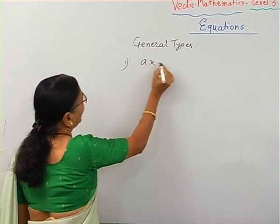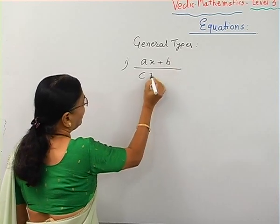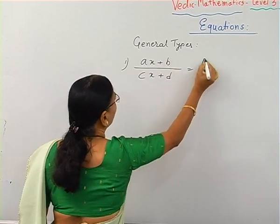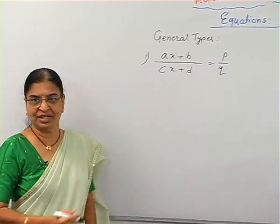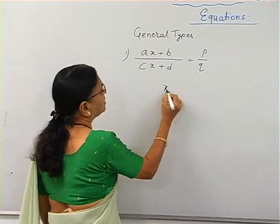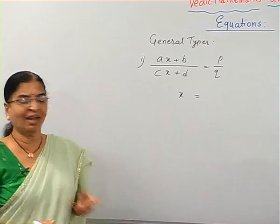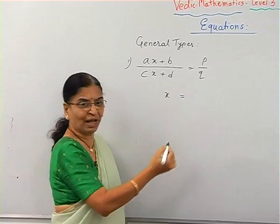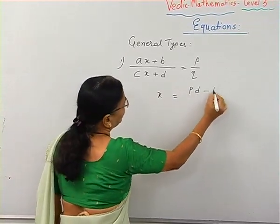One type is (Ax plus B) upon (Cx plus D) equal to P upon Q, where P and Q are all constants. Now how will you find the value of X here? To find the value of X, I will give you the formula: X equals PD minus BQ.